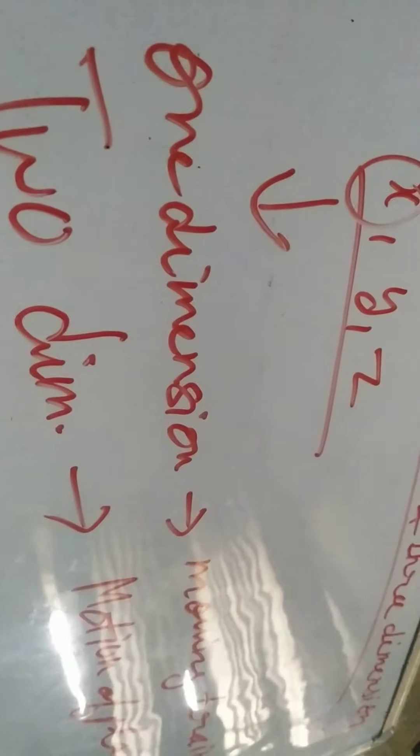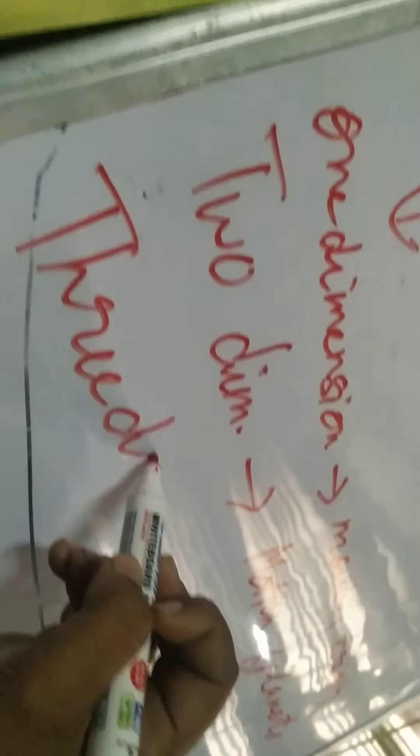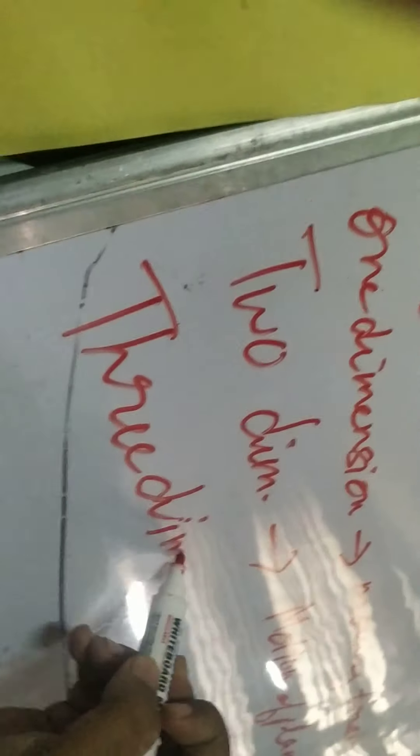That is two-dimensional motion. And three-dimensional motion is that in which all three coordinates — x, y and z — specify the motion. An example of this is a flying bird, in which all the coordinates are used.